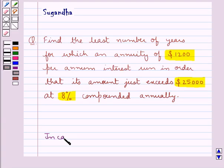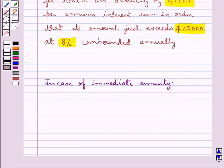Now, in case of immediate annuity, we have A is equal to small a upon i into 1 plus i to the power of n minus 1 the whole.